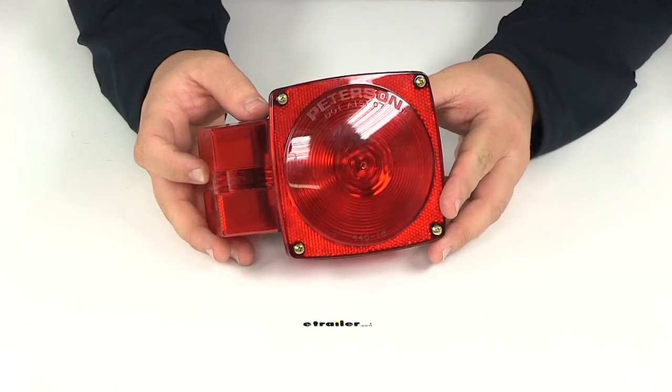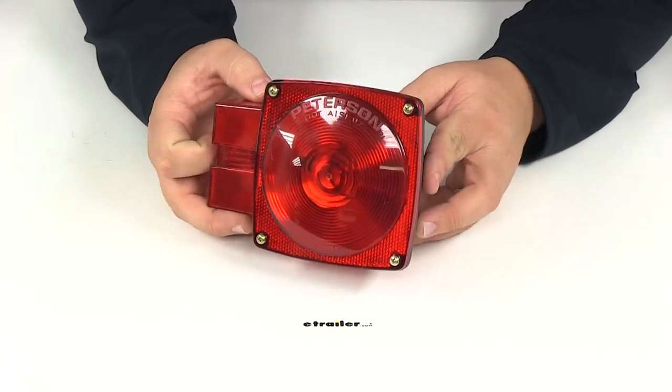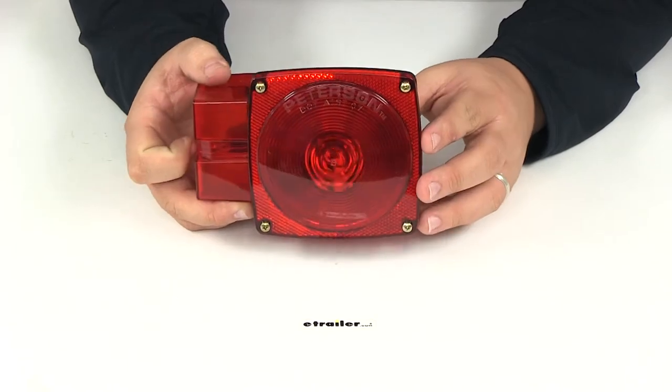Now if you need a light for the right hand side of your trailer you can find that at etrailer.com using part number PM444.